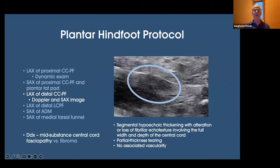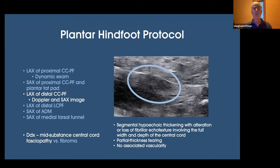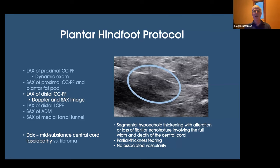Most of us who scan a lot of these see this quite a bit — these thickenings in the central cord. Is this a fasciopathy or is this a fibroma? Because fibromas are quite common. What I find interesting is that there's very little written about the details of mid-substance plantar fasciopathy. There's plenty written about fibromas, but nothing about trying to distinguish a fibroma from a fasciopathy. My goal here is to get the conversation started. We see a change in the fibrillar echo texture and disruption of that texture.